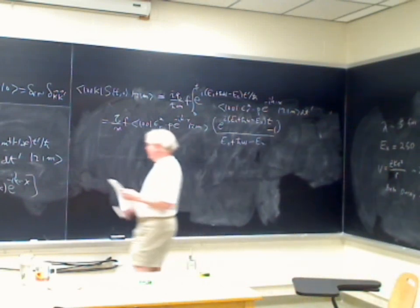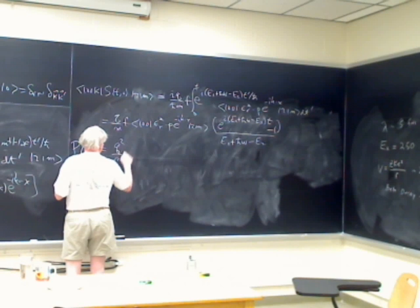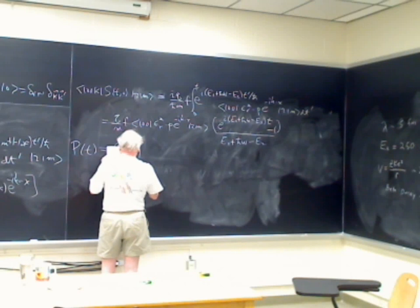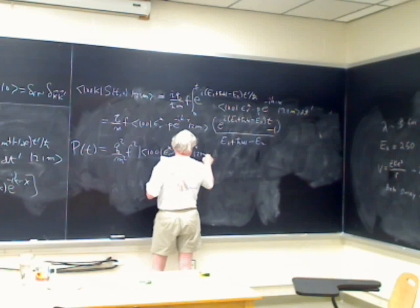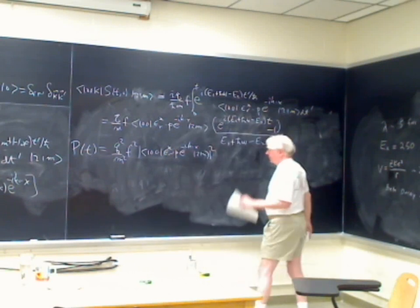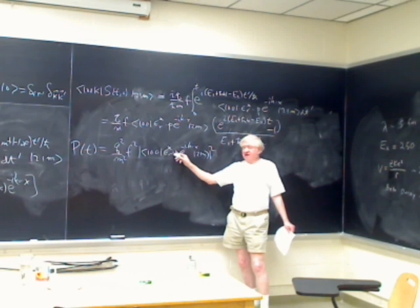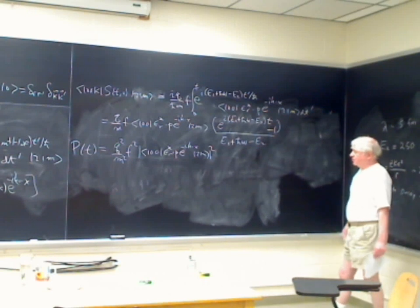The probability is Q²/M² times F² times the matrix element squared. Notice that because the matrix element is squared — as always happens in quantum mechanics — the coupling constants come in as a square and the dipole approximation terms come in as a square. That's what makes the dipole approximation so good and makes quantum mechanics so accurate, because the coupling constant is effectively 1/137 — the square of the coupling constant is 1/137 — so the power series converges very quickly.